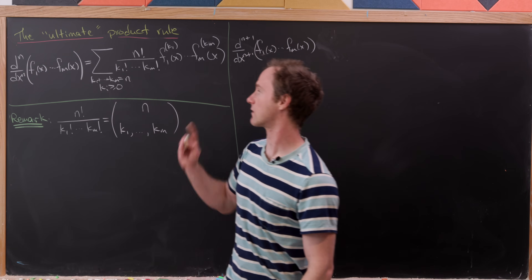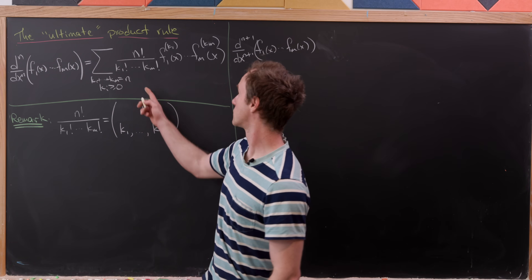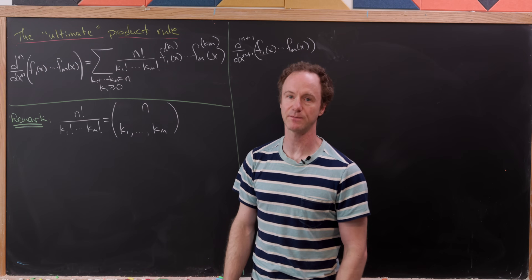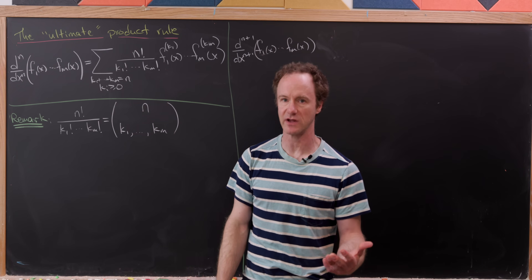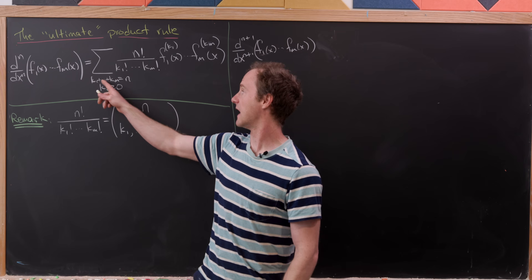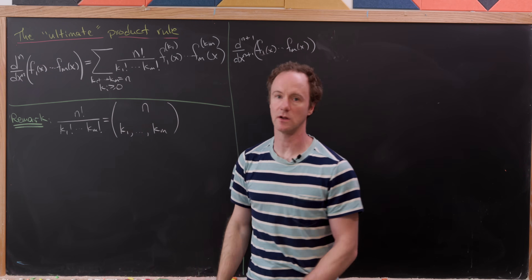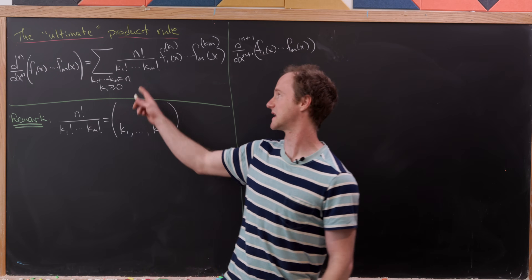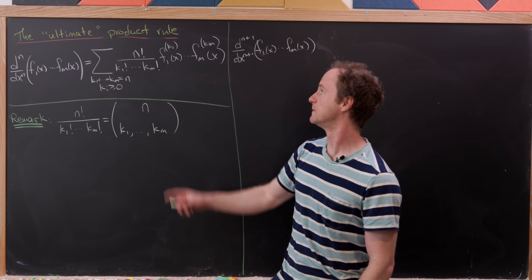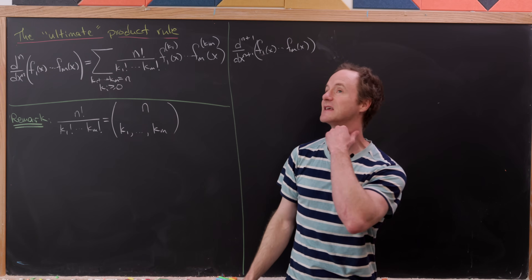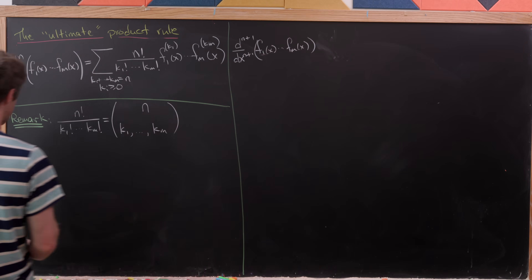We'll prove that the nth derivative of the product f1 up to fm is equal to this sum: the sum over all k1, k2, k3 up to km, where those are non-negative and they sum to n. The object we're summing is n factorial over k1 factorial times k2 factorial all the way up to km factorial, times the k1st derivative of f1, the k2nd derivative of f2, all the way up to the kmth derivative of fm.